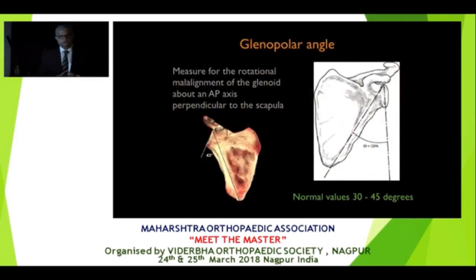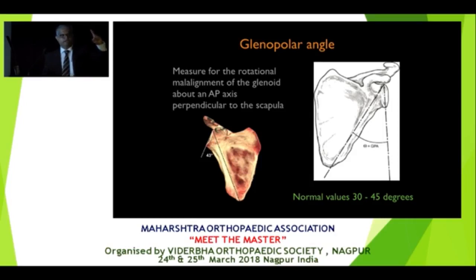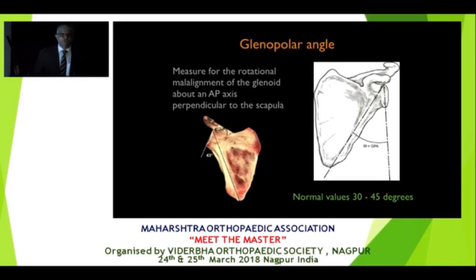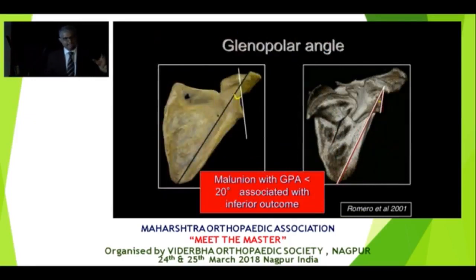What is the glenopolar angle? You look at the articular surface alignment of the glenoid in relationship to the scapula and draw two lines. One from the cranial-most portion of the articular surface of the glenoid — the apex — dropped to the 6 o'clock position of the glenoid. The other line is from the cranial-most portion of the glenoid to the caudal-most portion of the body of the scapula. Normally this angle is between 30 to 45 degrees. If it is less than 20 degrees, these patients will have a very poor outcome.